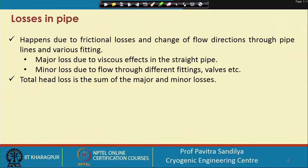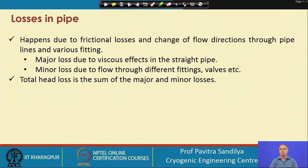In a piping system whenever a fluid is flowing, there will be some frictional losses, and also some losses will happen whenever there is any kind of change in the direction of flow. These frictional losses are generally called skin friction, and the loss of pressure due to change in flow direction is called form drag.